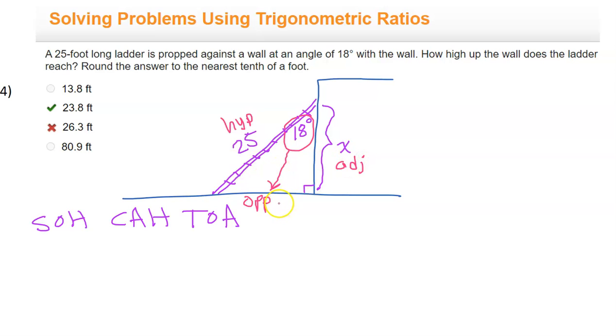Now which two sides are we dealing with? We've got the 25, which is the hypotenuse, and we've got the X, which is adjacent. Those are the two sides we're dealing with, so we're not going to do anything with the opposite leg this time.